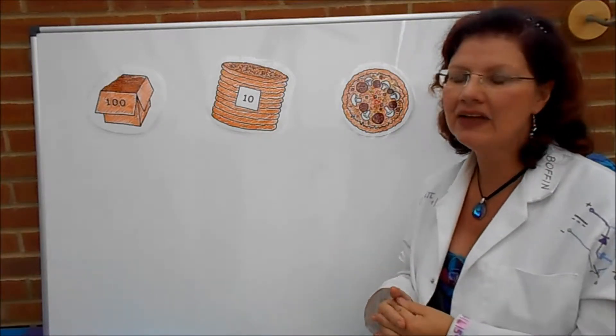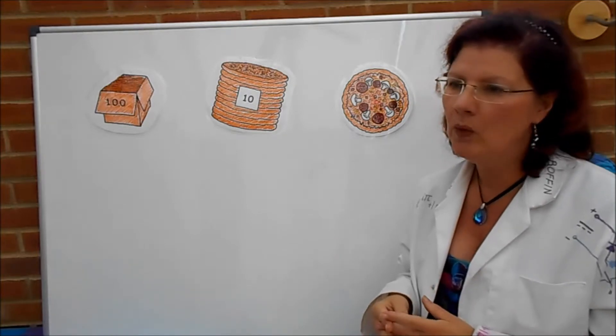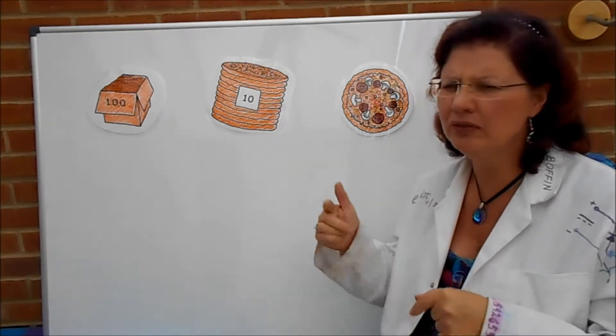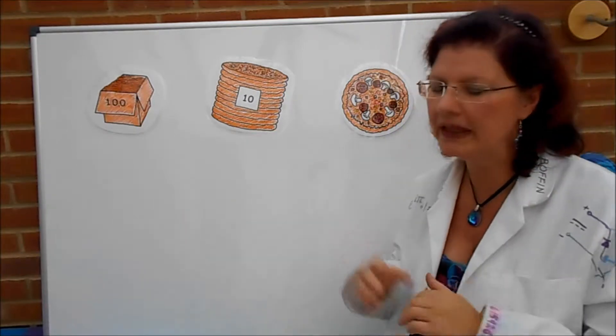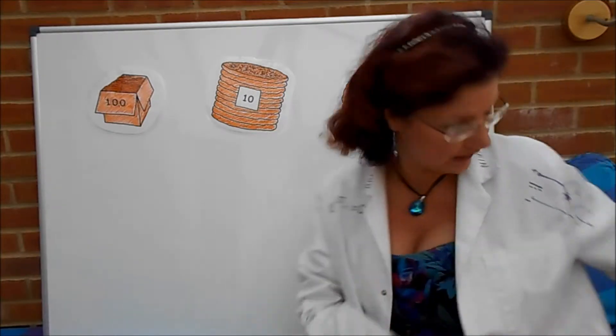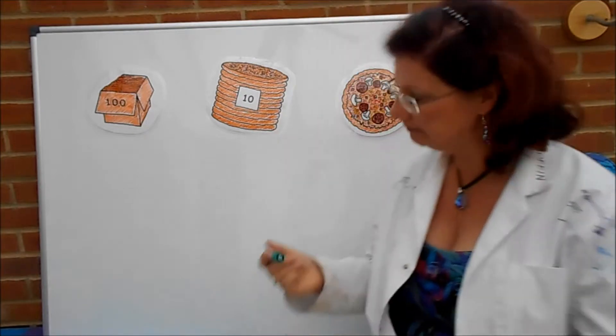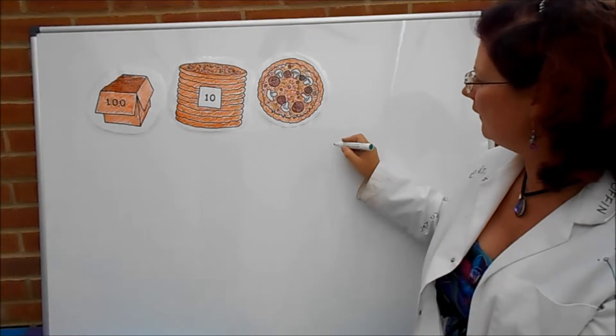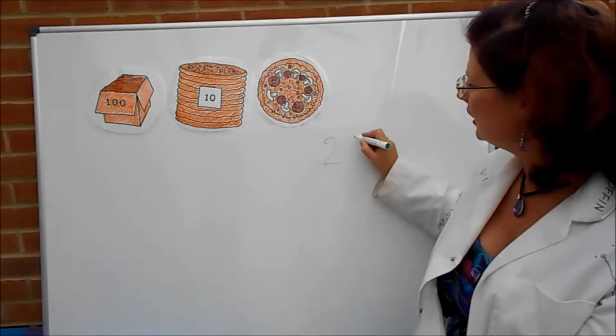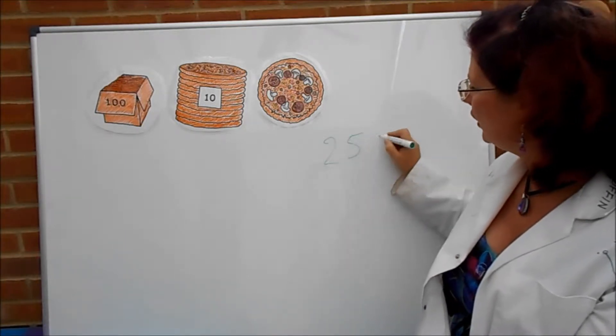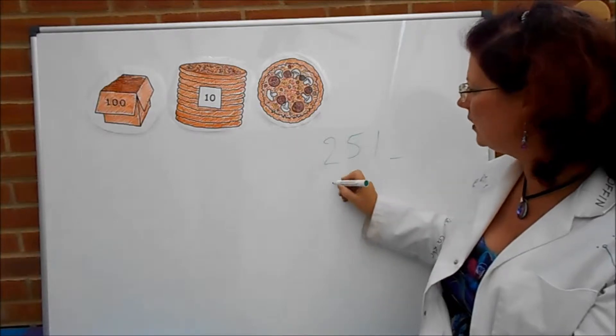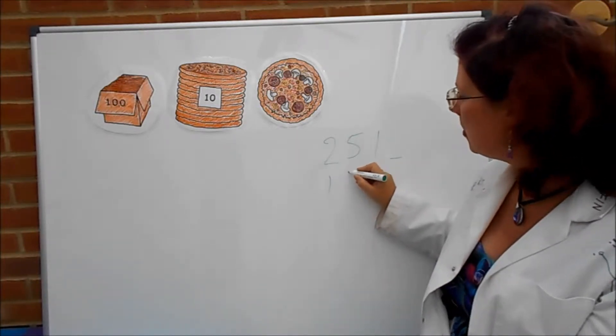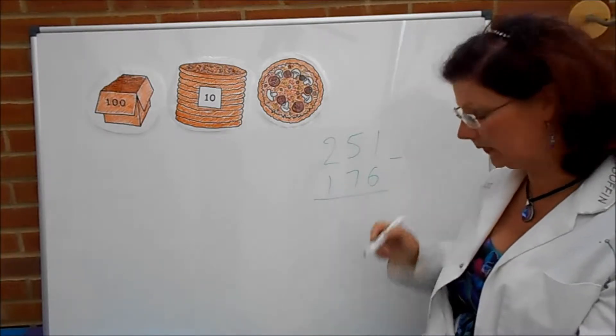Now today we're going to be looking at doing some subtracting with the bit where you haven't quite got enough to take them away and you've got to borrow from next door or something like that. So we're going to have a look at that. And we're going to do the sum, let's have 251 and we're going to take away 176.